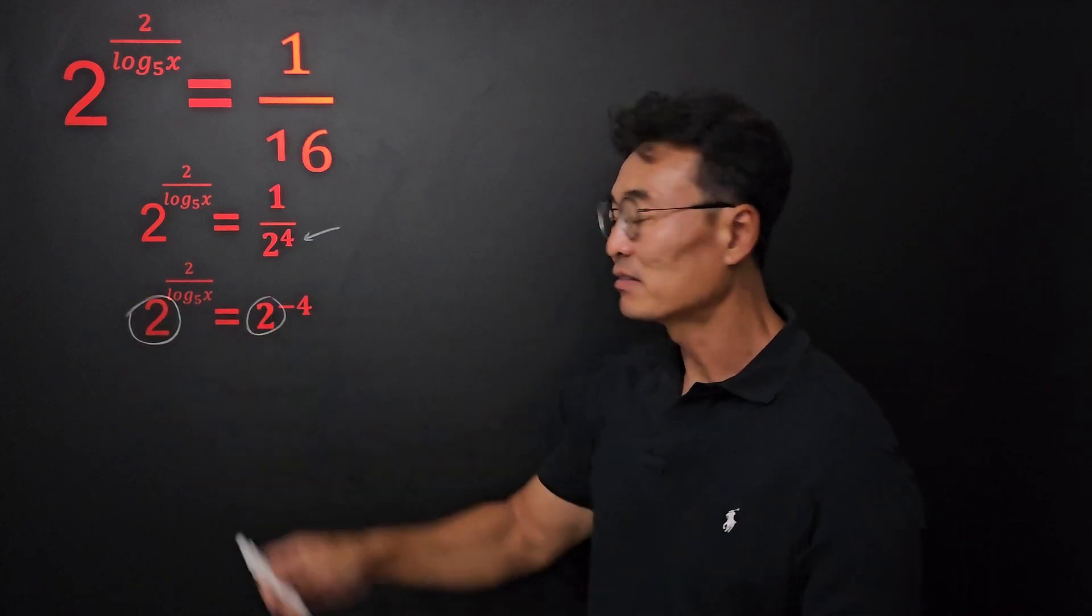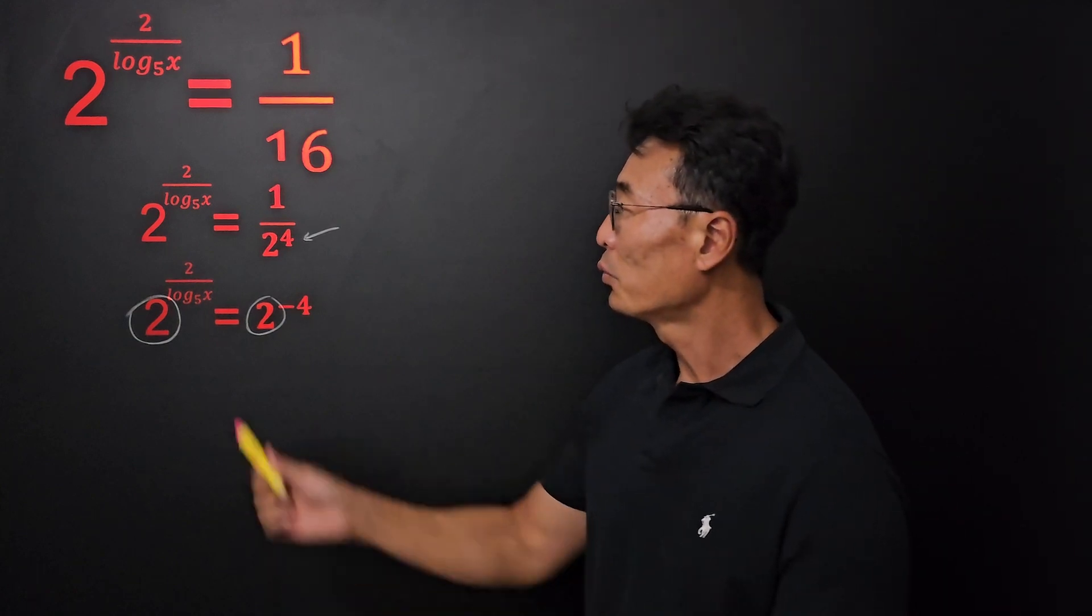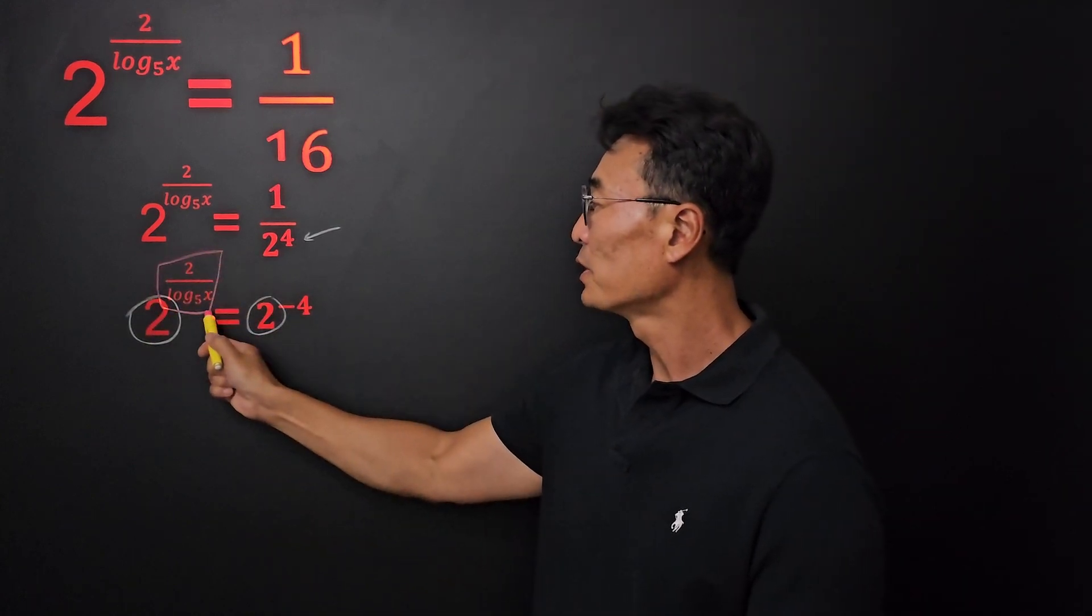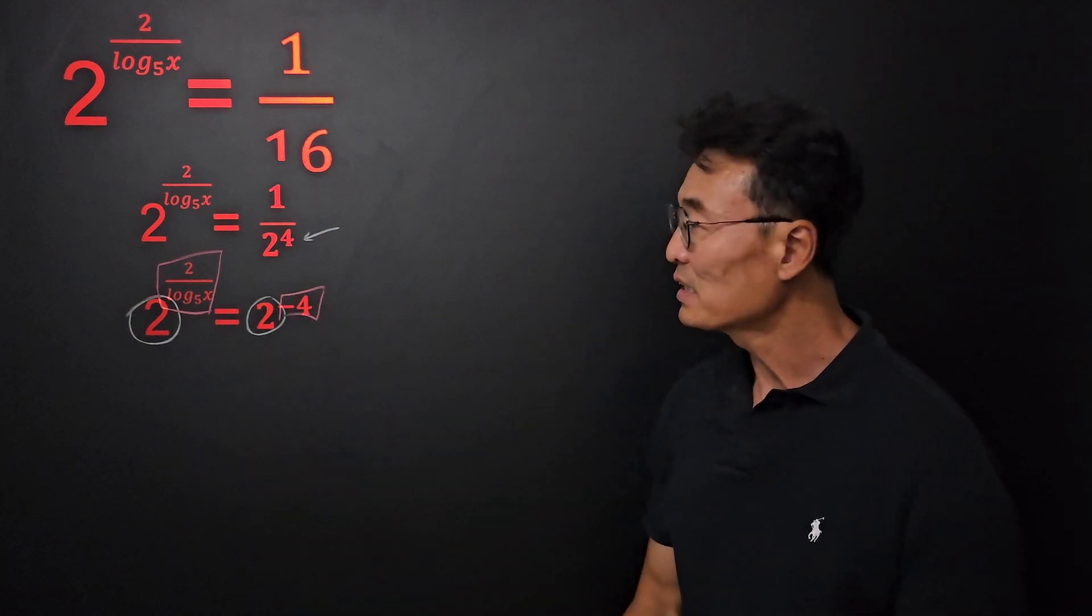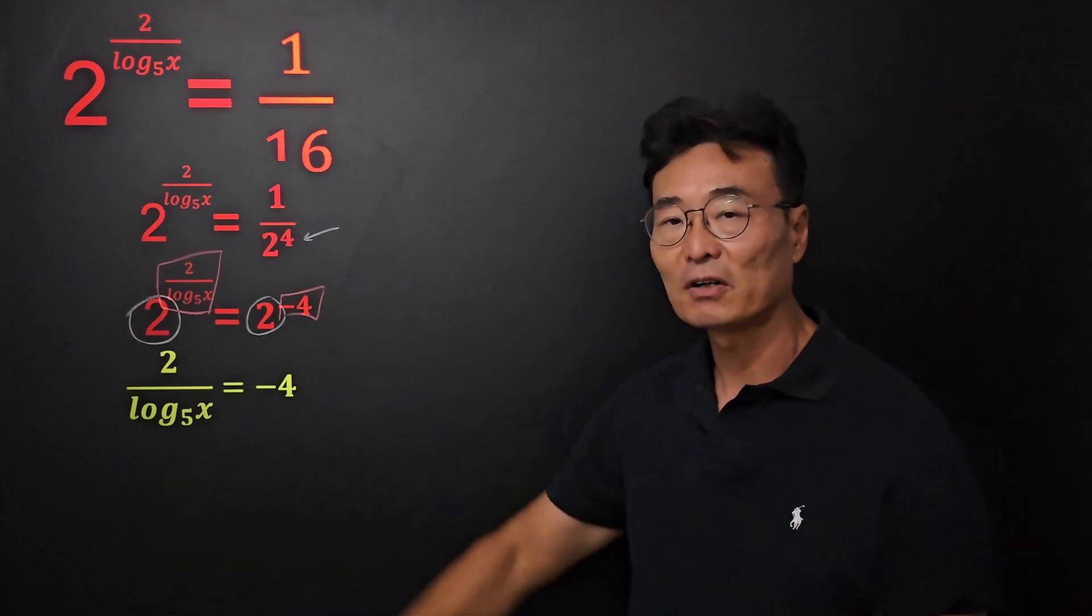Now that the base on the left side is 2 and the base on the right side is 2, we're able to take that exponent on the left, exponent on the right, set them equal to each other so we can solve for the value of x.